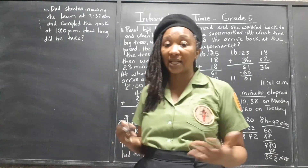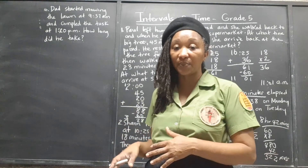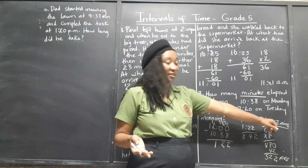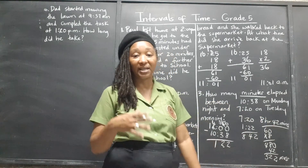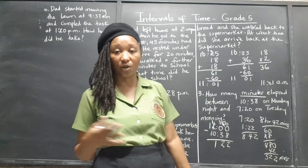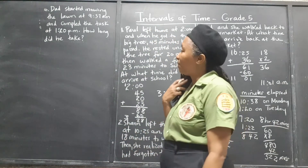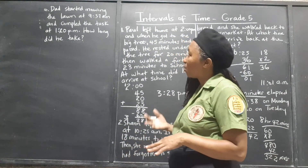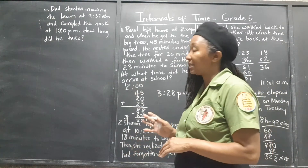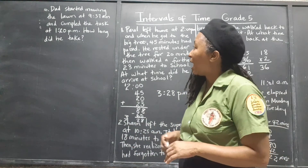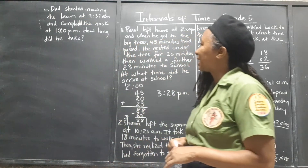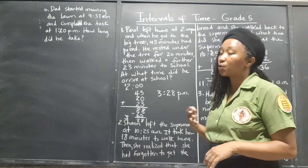Look to see if they want the answer in hours and minutes or just minutes. If they had said express it just as hours, we'd have to express the 42 as a fraction or decimal of 60 along with the 8 as a whole number in hours. Now let's look at the final problem. Dad started mowing the lawn at 9:37 AM, and he completed the task at 1:20 PM.